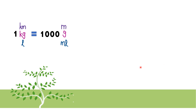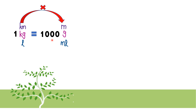Look at this — this is the relationship for these units. One km is equal to one thousand meters, one kg is equal to one thousand grams, one liter is equal to one thousand milliliters. I combine these units together because their relationships are the same. Converting from left to right, we multiply by one thousand.